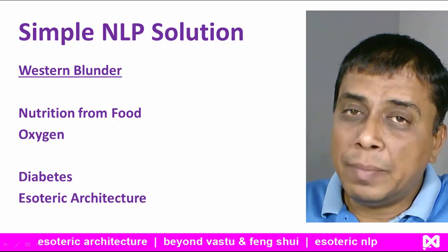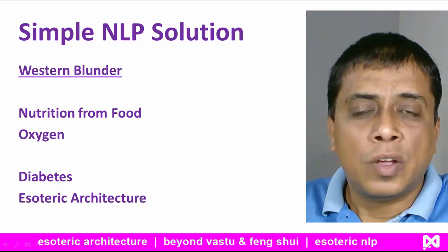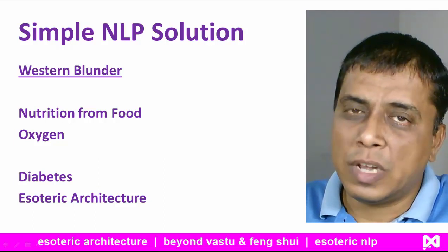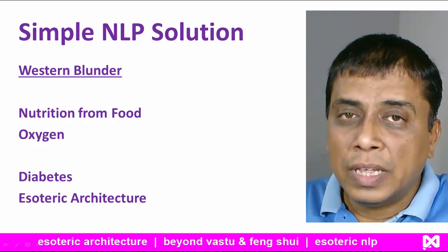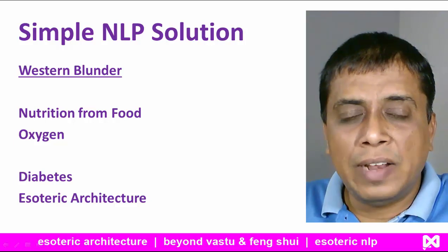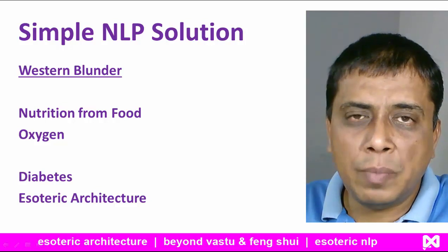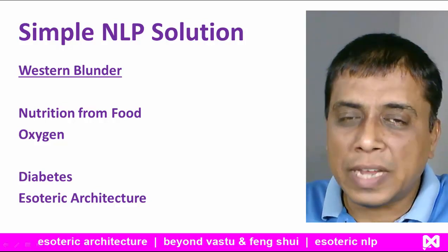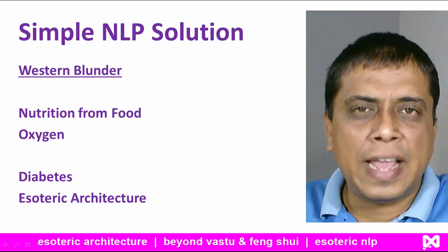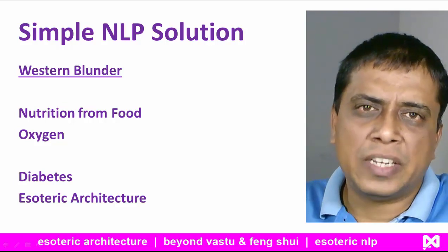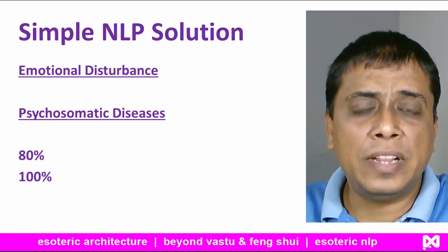If diabetes were because of food, then food would be digested within only 4 to 5 hours depending on the type of food. But even if they control food, they will still have a large amount of sugar in their blood vessels. So the problem is not food — it is something else which I will discuss later. In esoteric architecture, we easily heal diabetes just by designing within 15 to 30 days. So where does the problem actually lie?